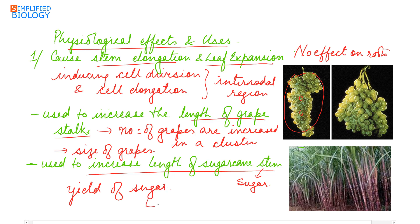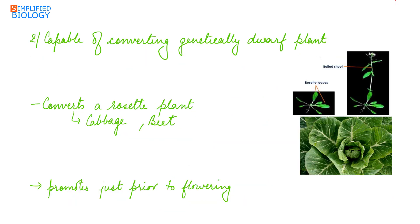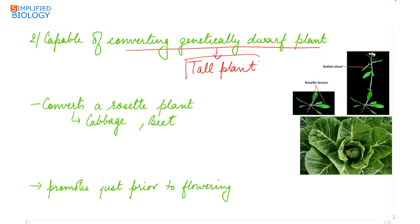Gibberellin is capable of converting a genetically dwarf plant into a tall plant. A dwarf plant of pea or corn can be made tall by providing gibberellin. It can also convert a rosette plant — a plant in which the internode length is very small, like cabbage and beet — into a tall one.